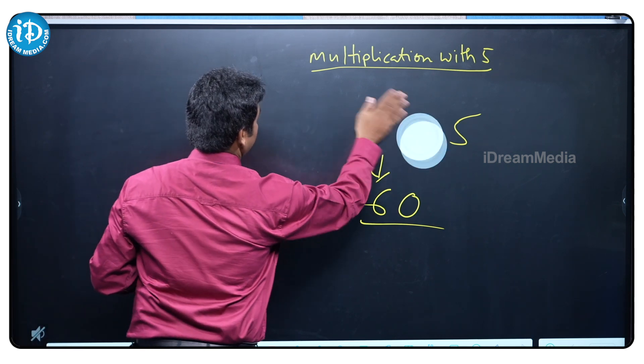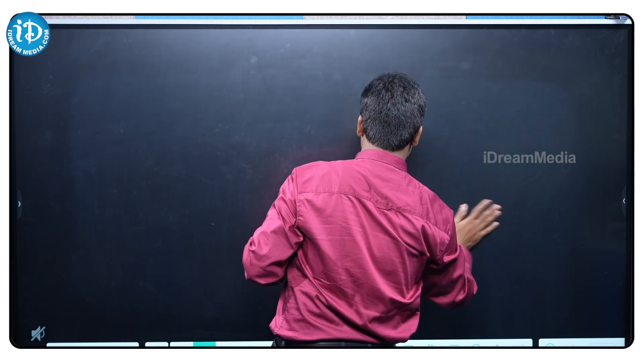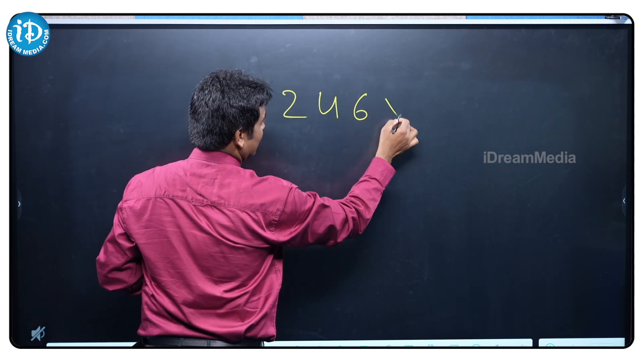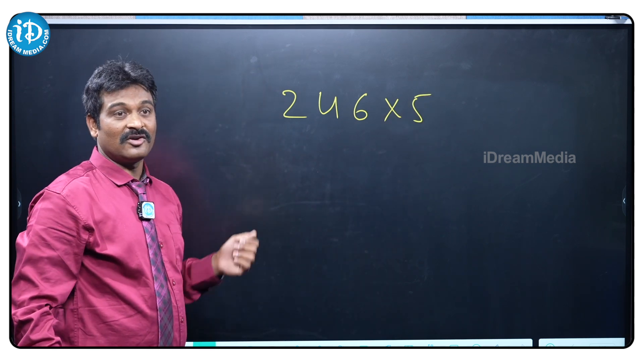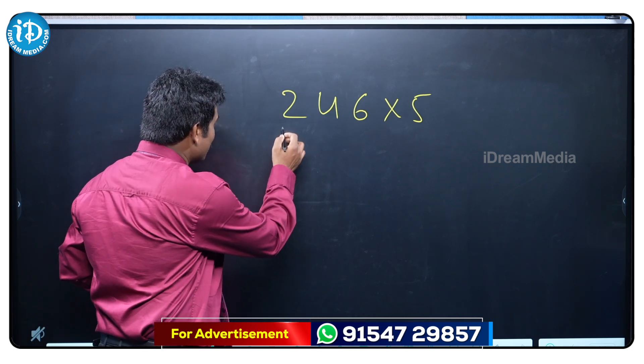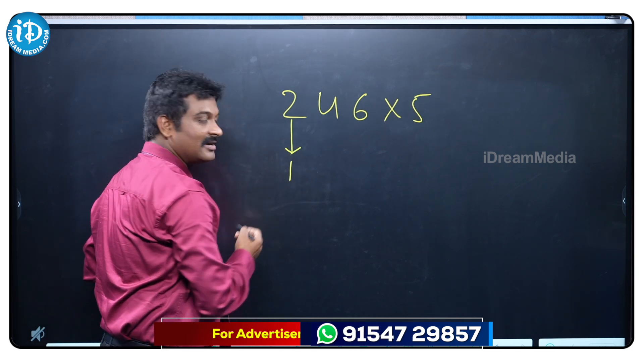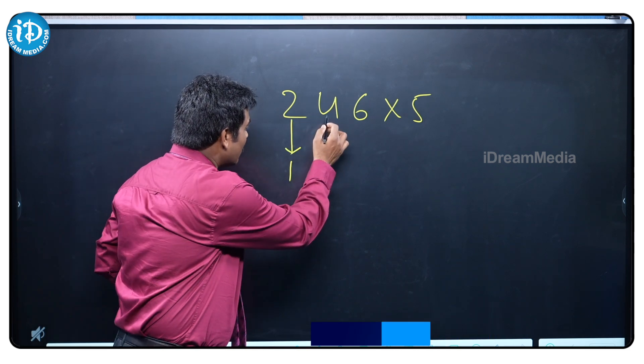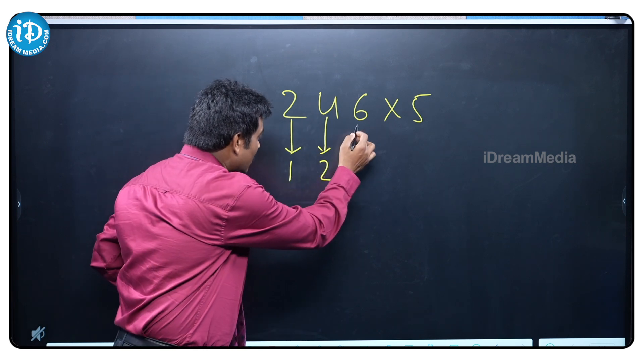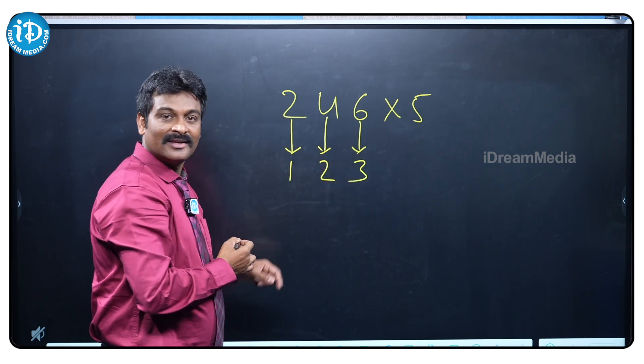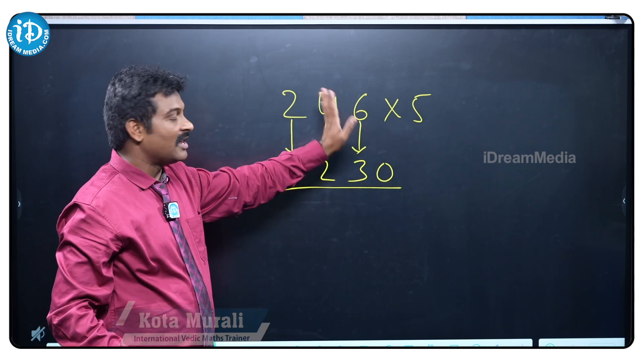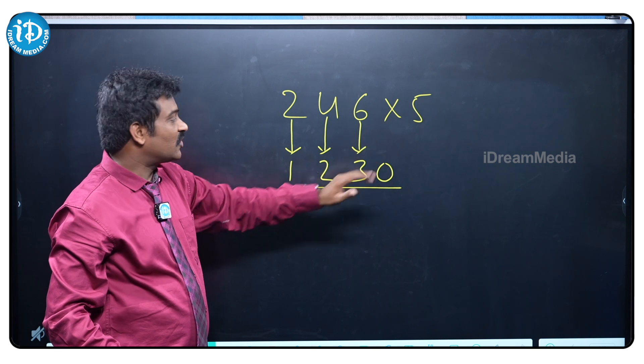After that, 246 into 5. The problem is too big, not like before. In this particular case, what we need to do? The half of 2 is 1, half of 4 is 2, half of 6 is 3. Attach a 0, that's it. Your answer is 1230. No need to multiply this number.